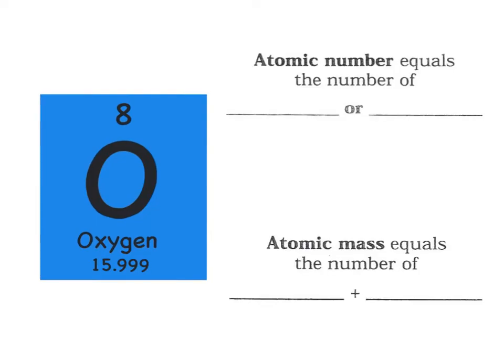So let's review. The atomic number equals the number of blank or blank. So what has to be balanced in order for Matterville to be stable? Of course it's protons or electrons. Remember, protons and electrons need to be equal in order for Matterville to be balanced.